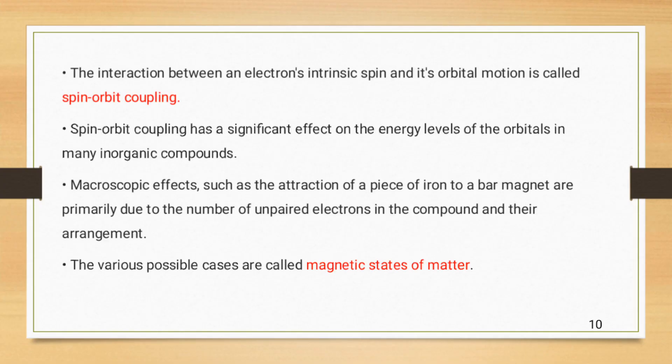The interaction between the electron's intrinsic spin and its orbital motion is called spin-orbit coupling. Spin-orbit coupling has a significant effect on the energy level of the orbitals in many inorganic compounds. Macroscopic effects such as attraction of a piece of iron to a bar magnet are primarily due to the number of unpaired electrons in the compound and their arrangement. The various possible cases are called magnetic states of matter.